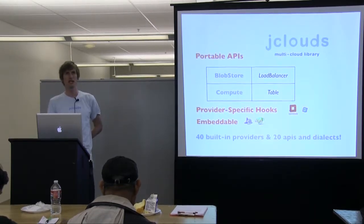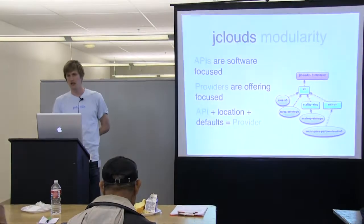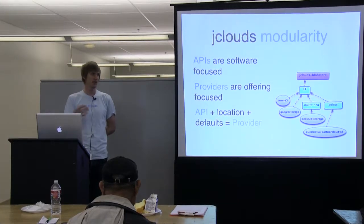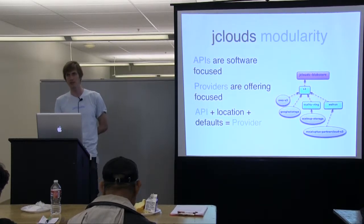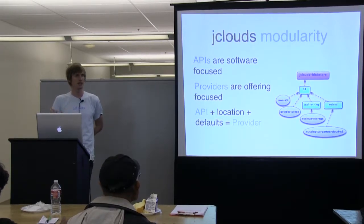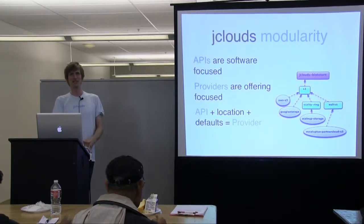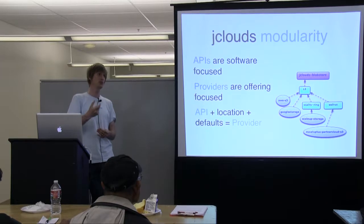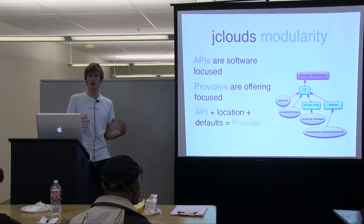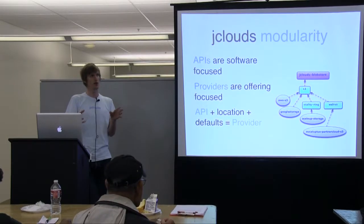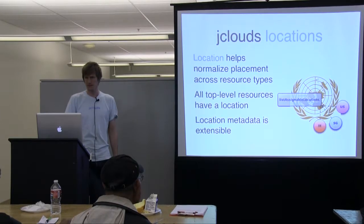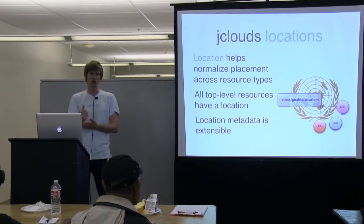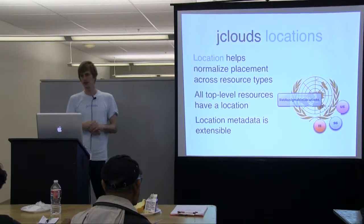We focus on providers and APIs. Providers are things like Amazon S3 versus the S3 API itself. There's been a lot of talk about APIs from a legal and compatibility perspective — we have to maintain a lot of dialects to deal with this. In code, we have things called APIs, which are reusable across different services, and things called providers, which are a binding of an API to a well-known endpoint with metadata like location. The location model is very important when working with global deployments, such as the worldwide Hadoop we'll do later.